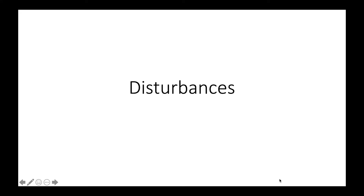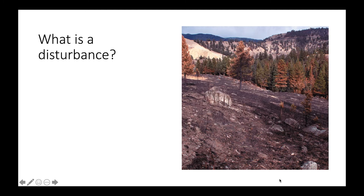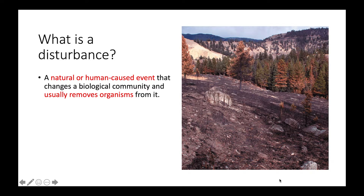This video is going to be about disturbances. A disturbance is a natural or human-caused event that causes a change in a biological community and usually results in the removal of organisms from that community. Some examples of disturbances include fires, storms, and floods. In this image we can see that there was some sort of fire that resulted in a lot of removal and change to this biological community.